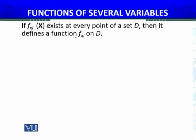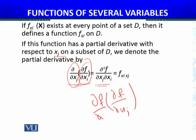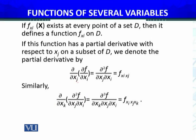If the partial derivative with respect to x_i exists at every point of a set D, then it defines a function f sub x_i, giving rise to mixed derivatives. Formally, if this function has a partial derivative with respect to x_j on a subset of D, we denote it accordingly — this is what we call the mixed derivative. The question is: if we first take the partial derivative with respect to x_i and then with respect to x_j, versus first x_j then x_i, are these two mixed derivatives equal? We will use these notations very frequently.